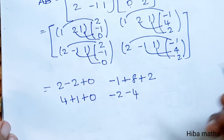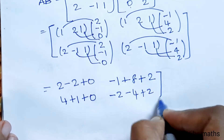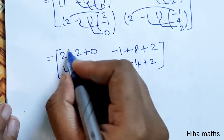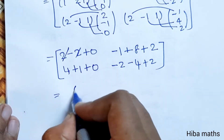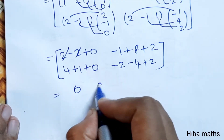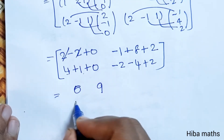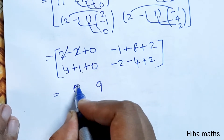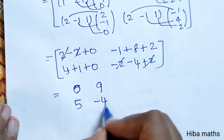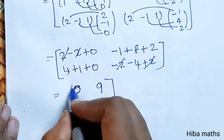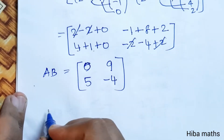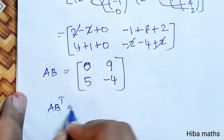1 into 2 is 2. Plus 2 minus 2 is 0. 8 plus 2 is 10, 10 minus 1 is 9. 4 plus 1 is 5. This is 0. Minus 2 plus 2 cancel, minus 4 gives 1. So this is the AB matrix, but we need (AB)ᵀ, the transpose.